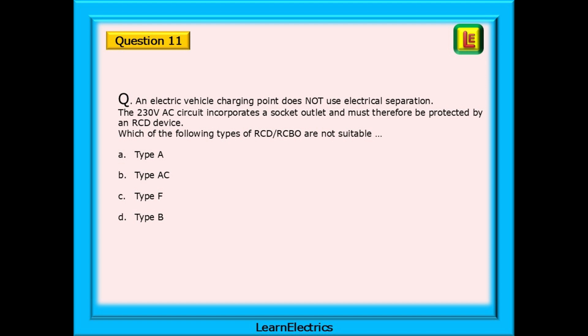For question 11, we have an electric vehicle charging point that does not use electrical separation. The 230 volt AC circuit incorporates a socket outlet and must therefore be protected by an RCD device. Which of the following types of RCD, RCBO are not suitable? Pause the video and find an answer.